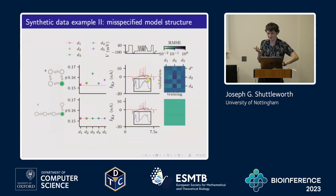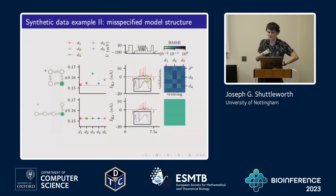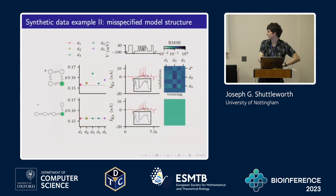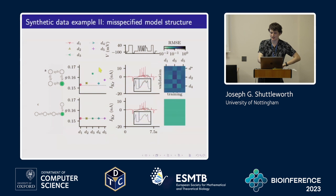The second example is about whether we can use this approach to find the correct model. There are two model structures — data was generated with model C, and when using the correct model structure everything is consistent and the training-validation heat map looks completely uniform. But when we have the wrong model it's misspecified and that's not the case — things are clearly different.